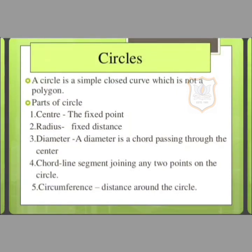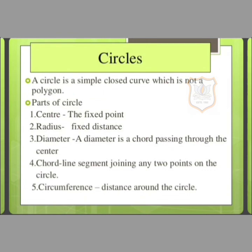Parts of the circle: First part, center, the fixed point. Second part is radius. The fixed distance at which the points are located from the center is called the radius. Third part is diameter. A diameter is a chord passing through the center. Diameter is the length of a line segment which joins any two points on the circle by passing through the center. Diameter is always double the radius.